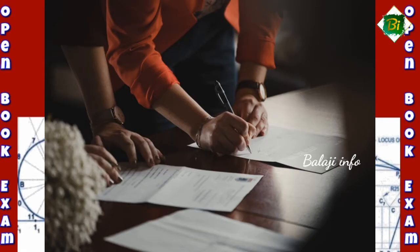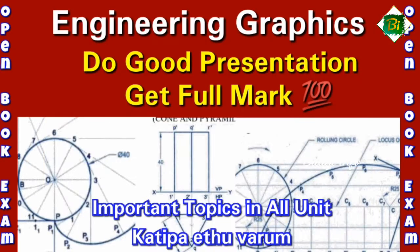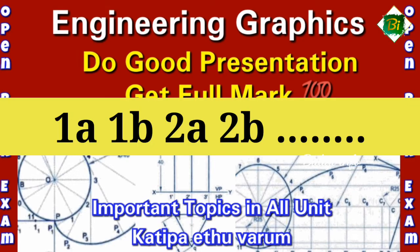You will have 5 units. If you want to know the subdivision, the units are: 1A, 1B, 2A, 2B, 3A, and 3B.